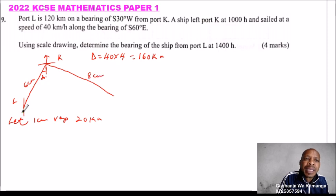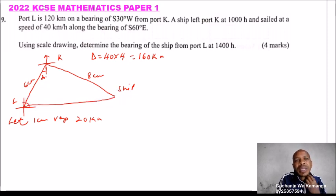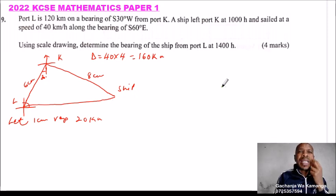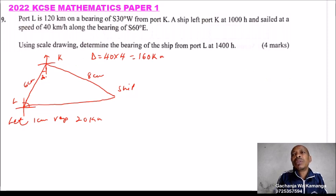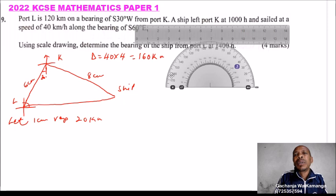To get the compass, we need to find the bearing from port L to where the ship is. We draw a line joining L to the ship's position and measure that angle. Now we make the actual drawing. What instruments do you need? You need a ruler and a protractor.